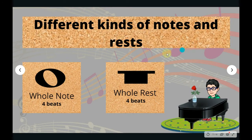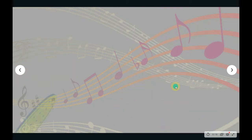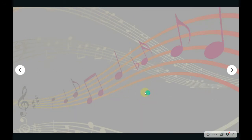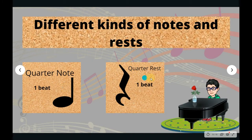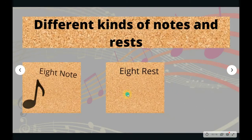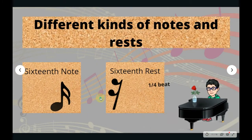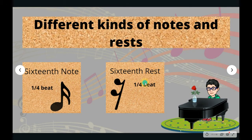Here are the different kinds of notes and rests with their time values. This is the whole note — it receives four beats. This is also the whole rest. The half note receives two beats, and the half rest also two beats. The quarter note and quarter rest both receive one beat. This is the eighth note and eighth rest.